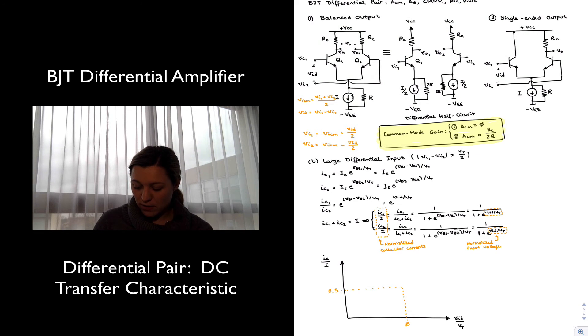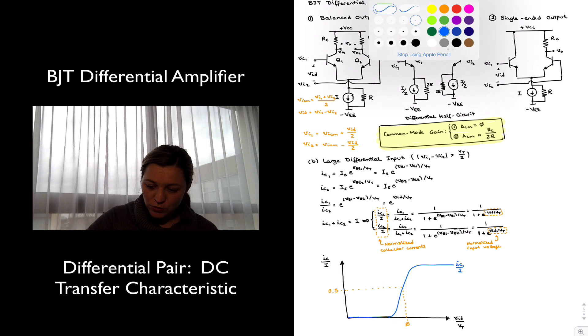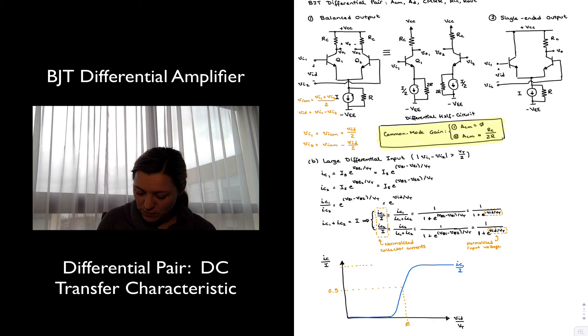For values that are very low, VID equal to a very negative value, then I will have that my IC1 will be very small, almost equal to zero, because all of the current is going to be steered through the branch of transistor Q2. But then as the differential input signal becomes small enough, we have a transition region, and then once it becomes positive enough, all of the current is going to be steered through the transistor Q1, and so this is going to reach an asymptotic value. So this is my curve for IC1 over I. Obviously that final value is going to just equal to 1 is when IC1 is equal to the overall current I.